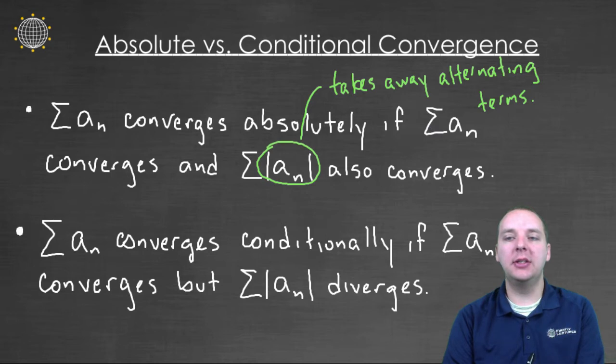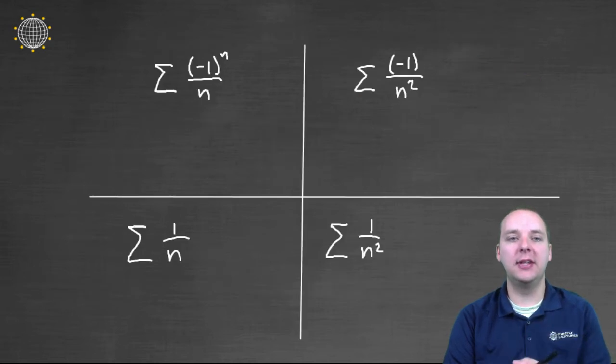Let's look at some examples, and we'll put some meat on this idea. Here are four infinite series I want us to take a look at, and we're just going to go through these one at a time very quickly. The first one is (-1)^n over n. The second is (-1)^n over n squared, and then one over n, and then one over n squared.